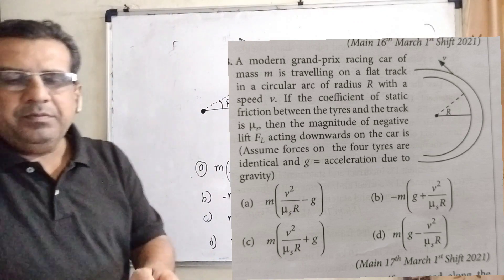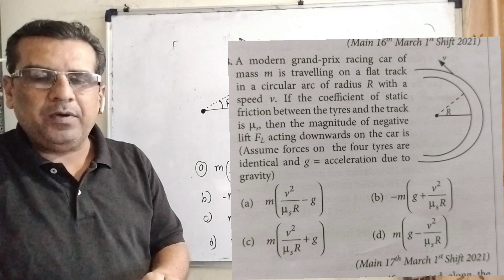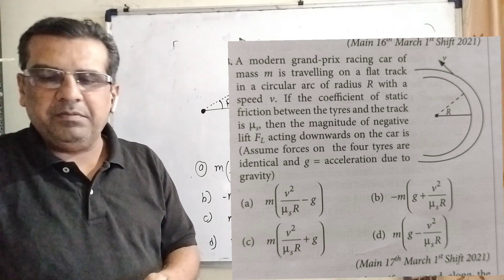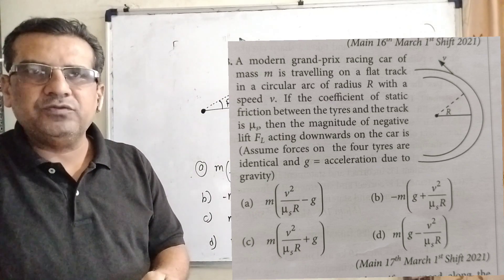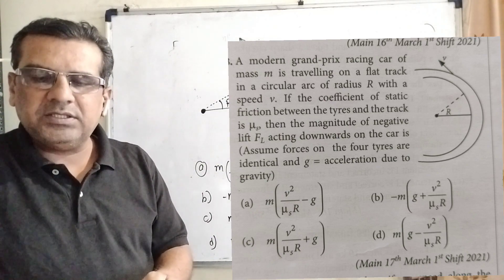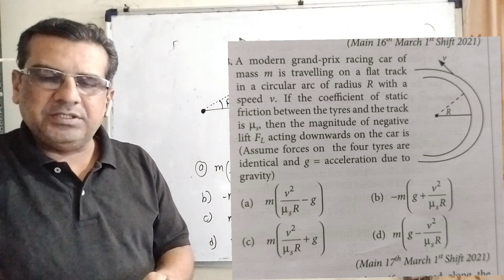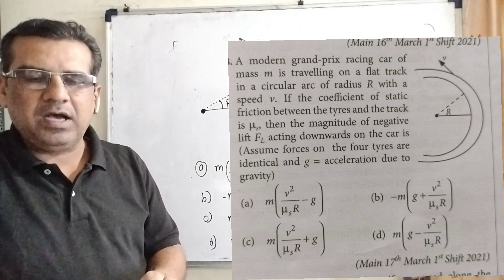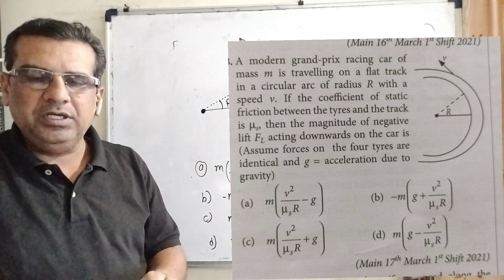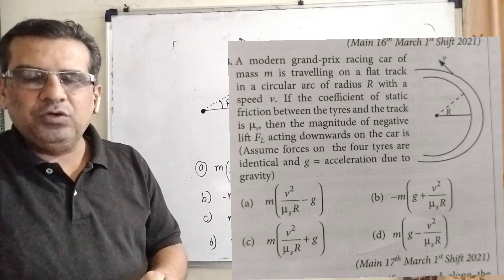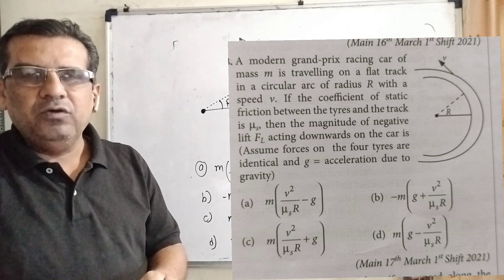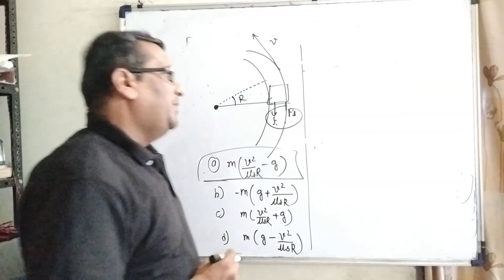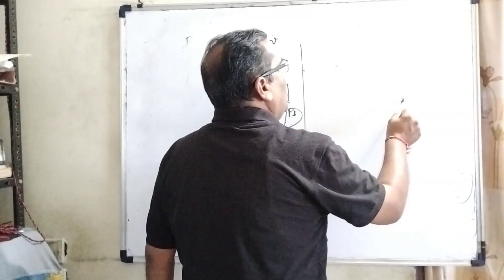The four options are: option A — m times (v² / μs·R − g); option B — negative m times (g + v² / μs·R); option C — m times (v² / μs·R + g); option D — m times (g − v² / μs·R). This question is based on an object moving on a leveled circular road.